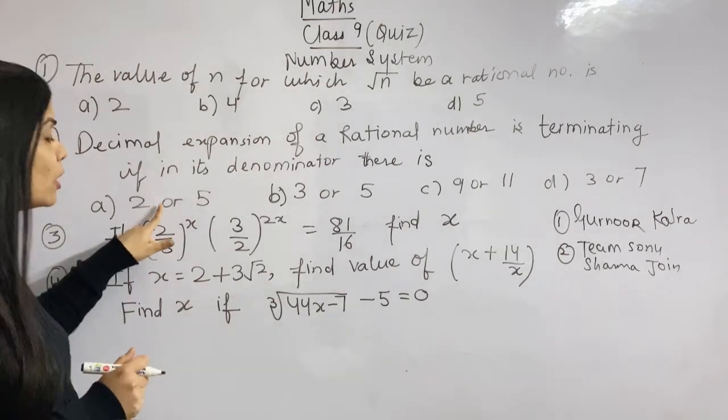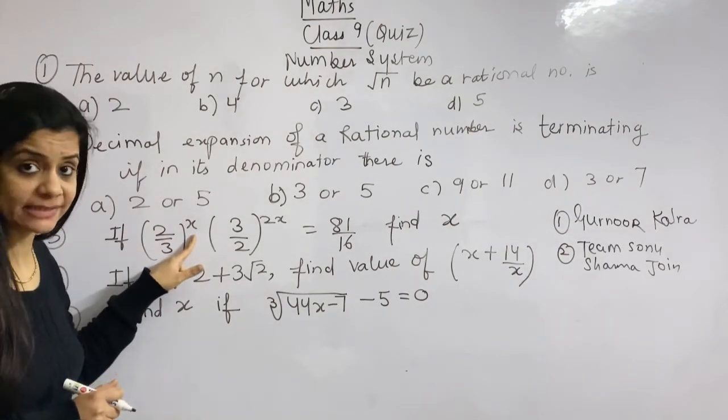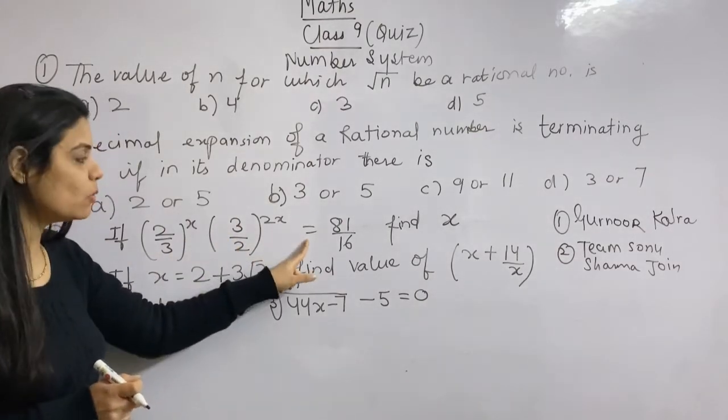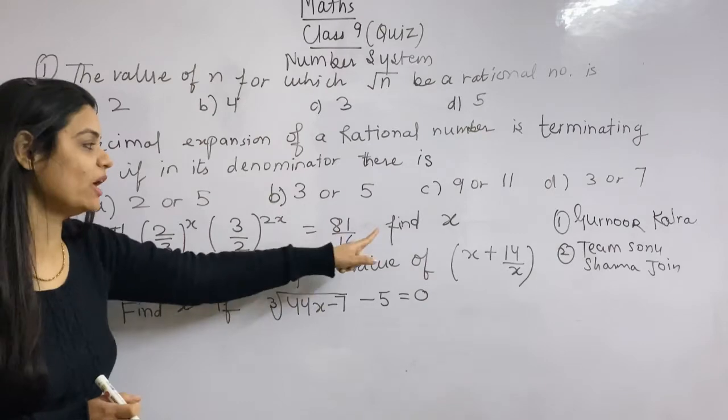This is if 2 upon 3 raised to the power x multiplied by 3 upon 2 to the power 2x is equal to 81 upon 16. Okay. Find x.